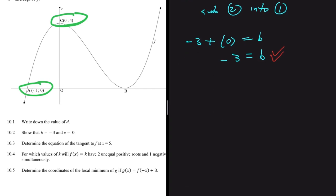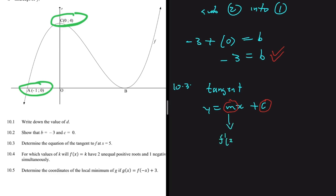Now let's do question 10.3: determine the equation of the tangent to f at x = 5. The equation of a tangent is that of a straight line: y = mx + c. To find it, we need two things — the gradient and the coordinates of one point.